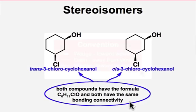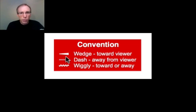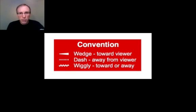Before we answer that question, we need a convention in order to represent three-dimensional information in a two-dimensional representation — like these line-angle drawings that are on a computer screen or a piece of paper. The convention we're going to use is the wedge bond to show atoms that come out of the plane of paper, and the dashed bonds to represent atoms that go into the plane of paper or the computer screen. The wiggle bond means that we don't know which direction the atom points — there's some ambiguity of the atom's position.